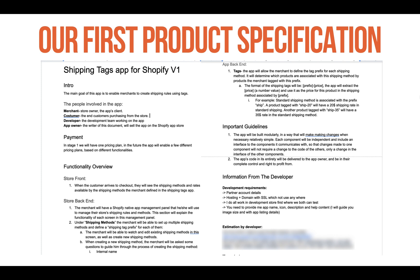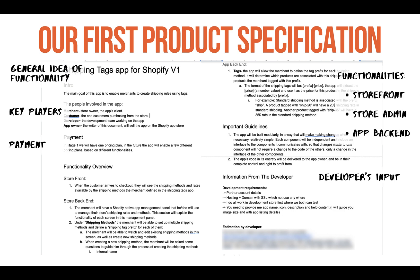We also wanted to share how our first ever specification document looked like. As you can see, it looks very unprofessional and kind of messy, but this is just to show you that even if you're not a professional product manager or developer, you can still do it. All you have to do is understand what you want your product to do and specify everything on a page. We've broken it down to a few sections: at the top, the general idea and app name; below that, the key players — merchants, customers, developers, and app owners — specified according to your idea.